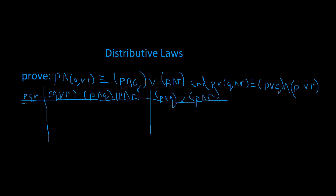Now put on the truth values, and this is the most tedious part. For P it will be: true, true, false, false, true, true, false, false. For Q: true, true, false, false. And for R, remember: true, false, true, false, true, false.